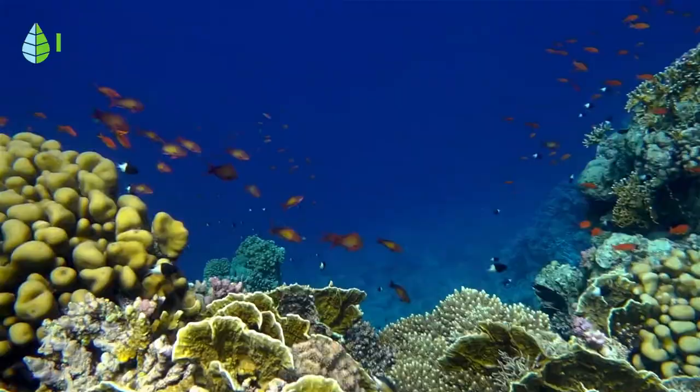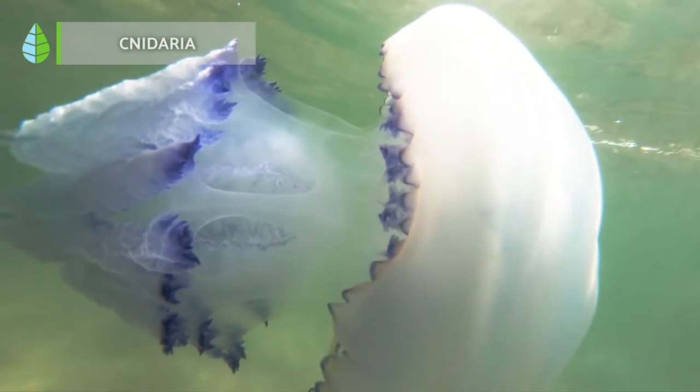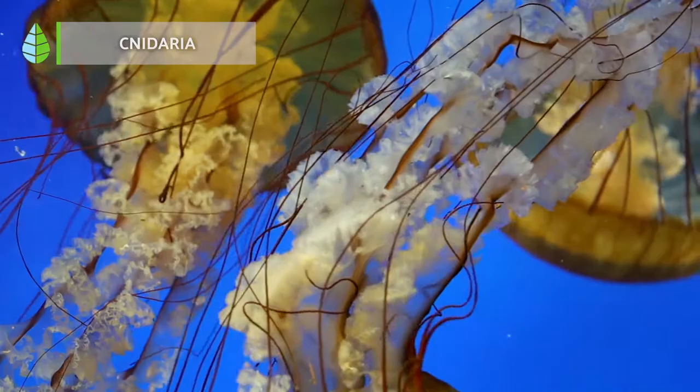Cnidaria: they are all aquatic and include corals, jellyfish, and hydras. Their bodies resemble a sac with one opening — the mouth — which is connected to the gastric cavity. Around the mouth they have tentacles with specialized cells called cnidocytes. These contain stinging substances that serve both to defend and to attack their prey.